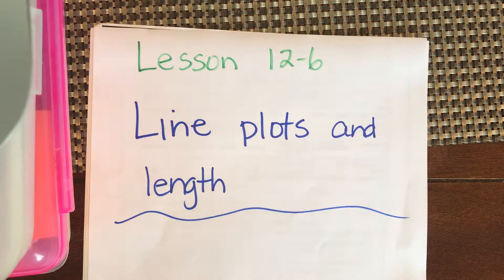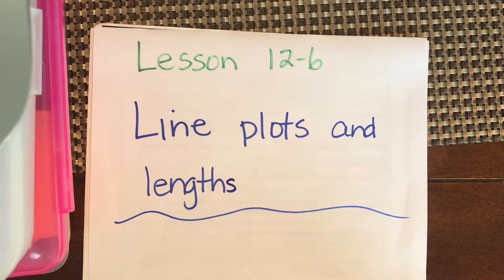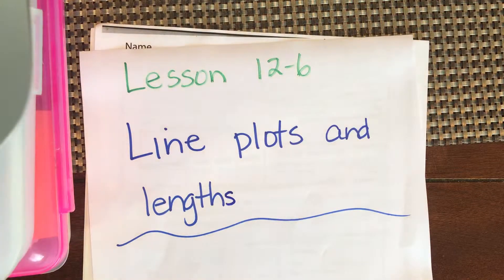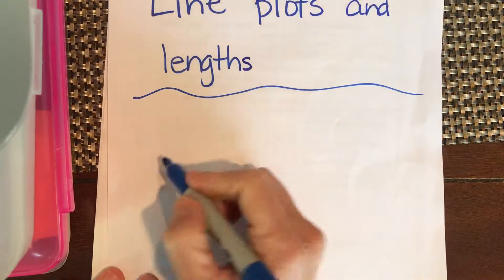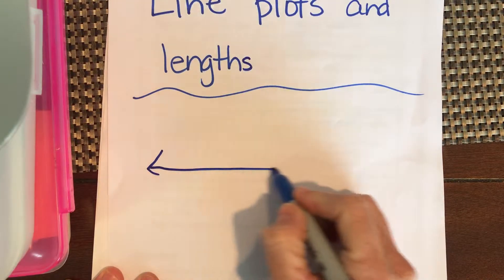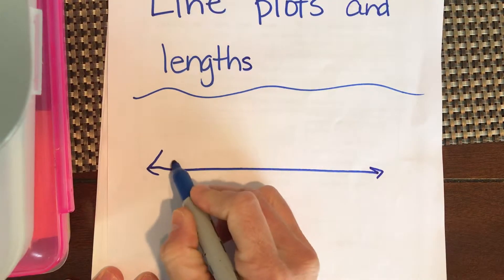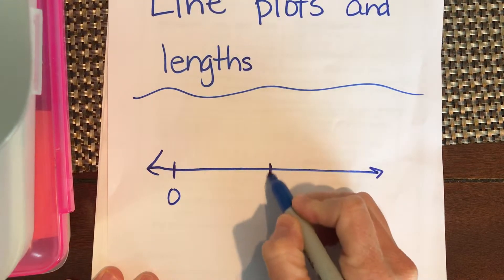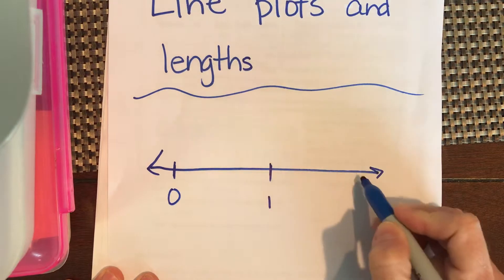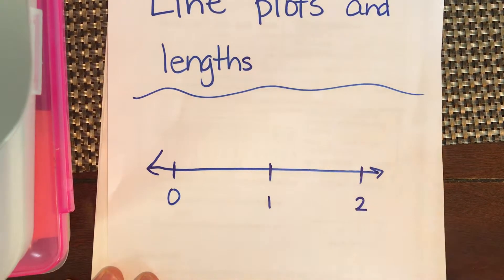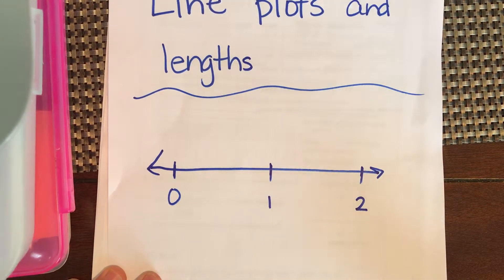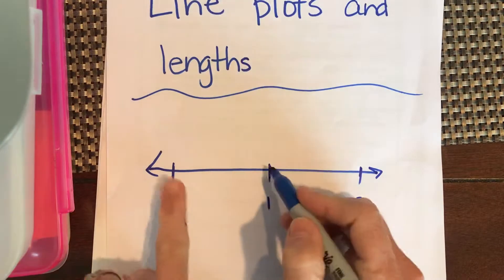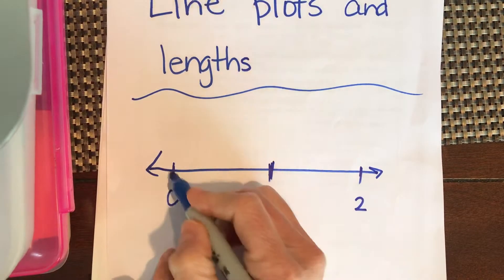We're going to do lesson 12-6: line plots and lengths. What we're dealing with here is basically a number line. Let's say we have zero, one, and two, and we're going to divide it into fourths.